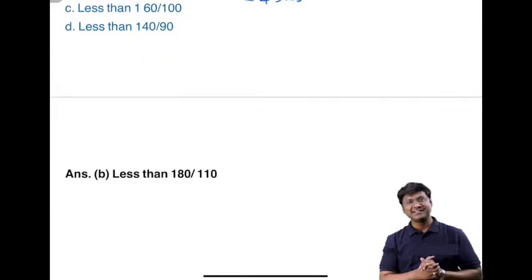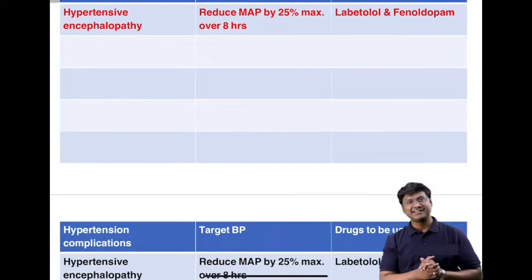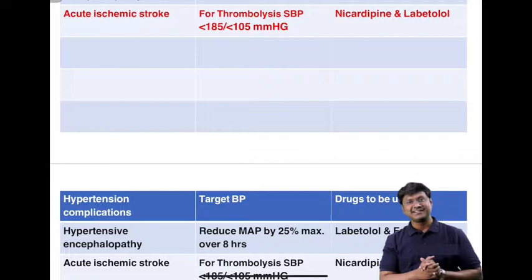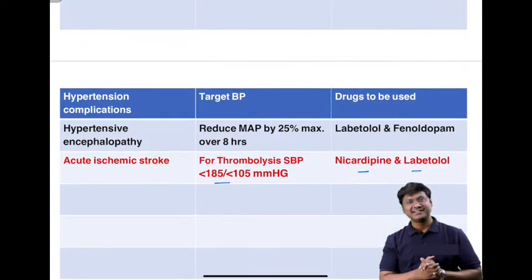In acute ischemic stroke, the blood pressure should be less than 185/105 mmHg. In order to achieve this, you need to give nicardipine and labetalol to reduce the blood pressure to less than 185/105.